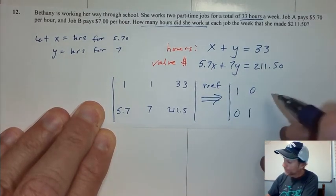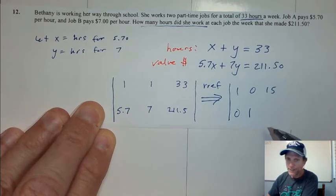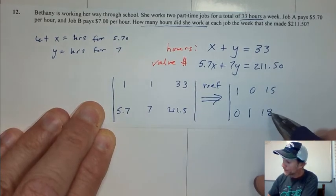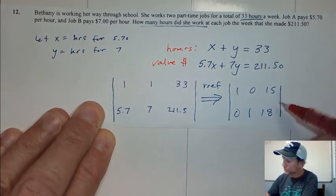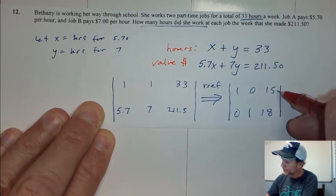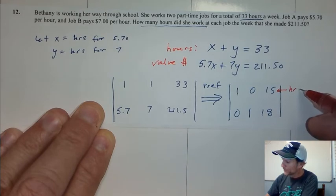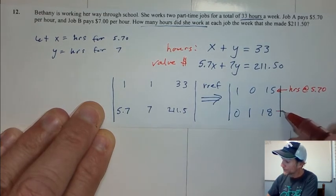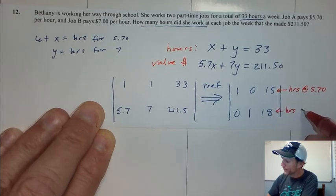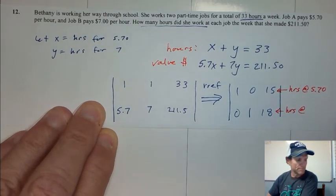And I'll get 15 and 18, and you notice that those do total 33. This is hours at $5.70, and this is hours at $7.